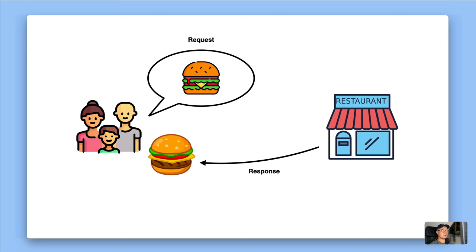The key difference is that in the restaurant example, humans are talking to other humans, so you don't have to be particularly precise about how you order. But with an API, there are no humans involved — it's one application talking to another. Applications do not cope well with imprecise or unclear information. So you have to be much more careful about the structure of the information you provide, the format you provide it in, and the structure and format of the information you get back.